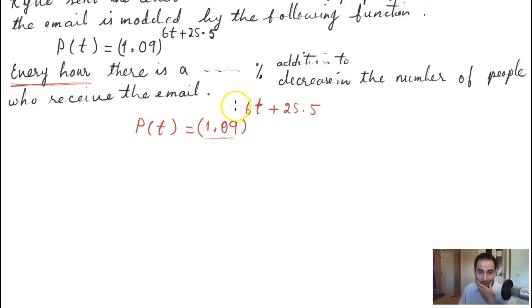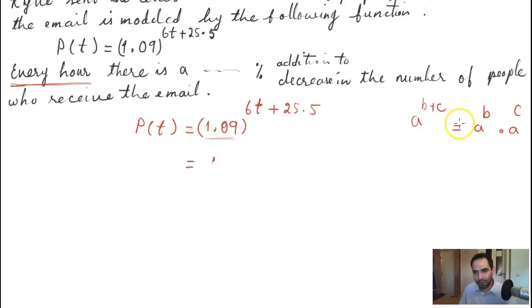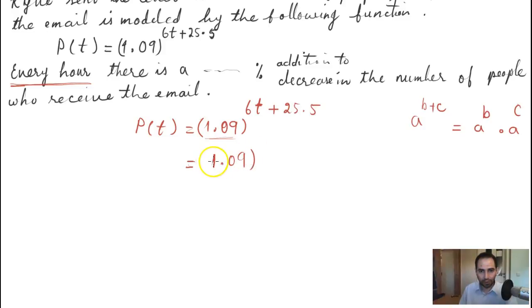In order to do that, I need to make some changes to this equation so that I have only t as the index. I can use the exponent rule: a raised to the power (b + c) can be written as a^b times a^c. So I can break up 1.09^(6t + 25.5) into 1.09^(6t) times 1.09^25.5.